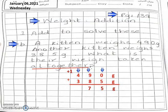Next is 4 plus 3. Keeping 4 in mind, open your 3 fingers: 4, 5, 6, 7. And plus 1 carried over makes 8. So 875 grams is the answer.